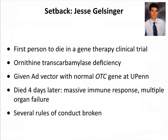Jesse Gelsinger was an 18-year-old with ornithine transcarbamylase (OTC) deficiency — usually lethal at birth, but he had a milder mutation managed with diet. He enrolled in a trial at UPenn designed to develop vectors for babies with fatal OTC deficiency. He was given an adenovirus vector with the normal OTC gene via IV inoculation. Four days later he died from massive immune responses and multiple organ failure. It was found that Penn had broken many rules in conducting this trial. This case set back the whole field for many years and drove major changes to how gene therapy trials are conducted.